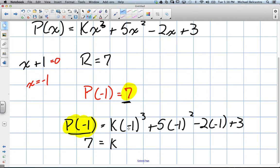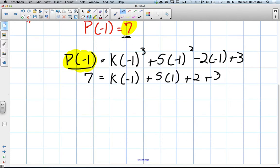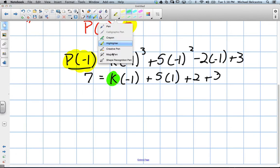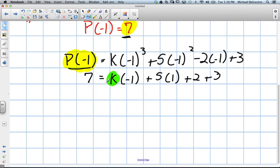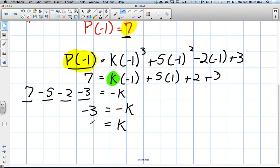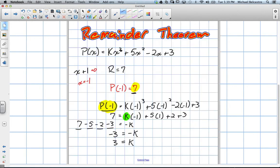So we have k times negative 1 cubed plus 5 times negative 1 squared minus 2 times negative 1 plus 3. So 7 equals k times negative 1, this becomes 5 times 1, this becomes positive 2 plus 3. When we do this, we get 7 minus 5 minus 2 minus 3 equals negative k. We get negative 3 equals negative k. We divide both sides by negative 1, we get k equals a value of 3.